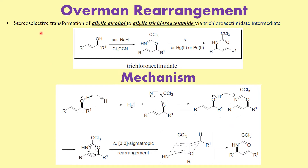As I said, this is a very interesting transformation reaction which involves the rearrangement of the allylic alcohol into allylic trichloroacetamide. When we use the word stereoselective here, what it means is that the stereochemistry is converted and preserved into the product.